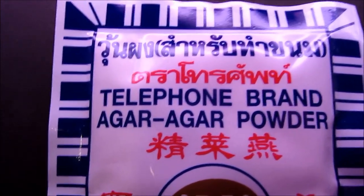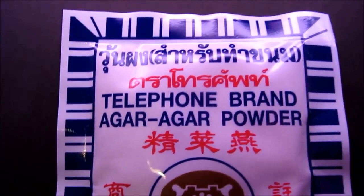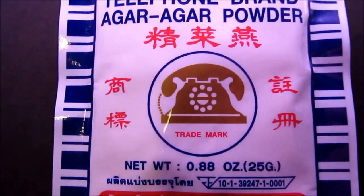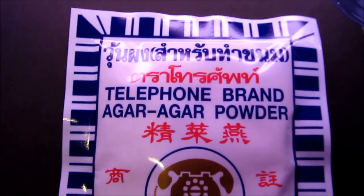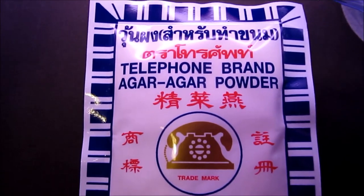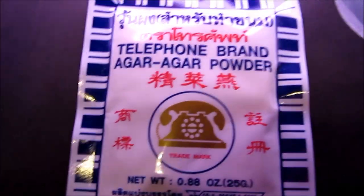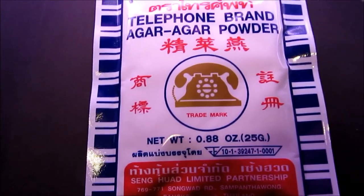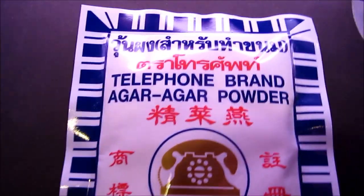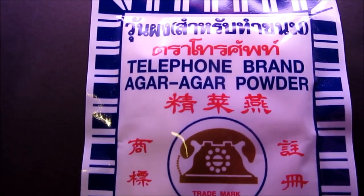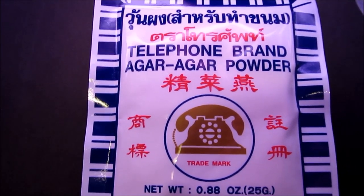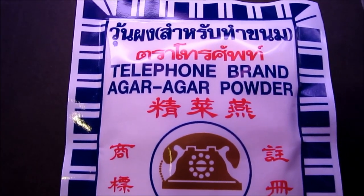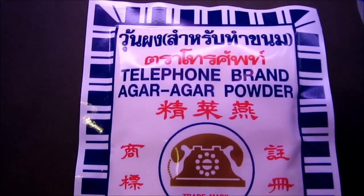Now this is our agar powder here, Telephone brand, as you can see by the picture of the telephone there. Almost any Asian grocery store, some Indian grocery stores will have these. It's sort of like an Asian jello or gelatin that's unflavored. They make a coffee dessert with it, so it's pretty common.